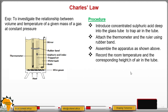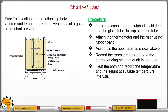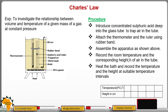That will be the starting point. Then from there, you are supposed to heat the bath and record the temperature and the height at suitable temperature intervals. Then fill in the table depending on the readings that you get — that is the temperature starting from room temperature, increasing, and then getting the corresponding height.